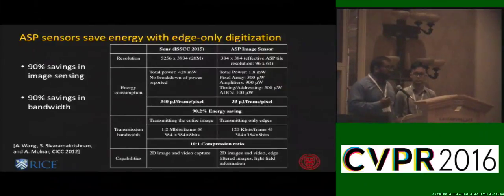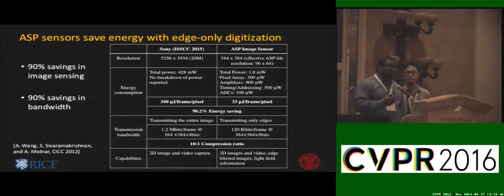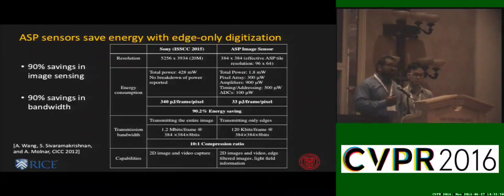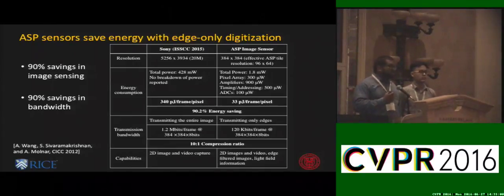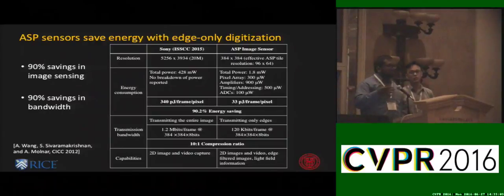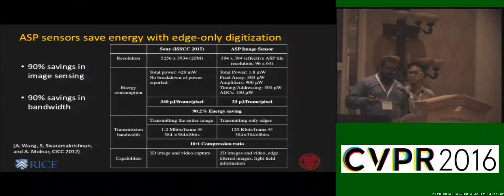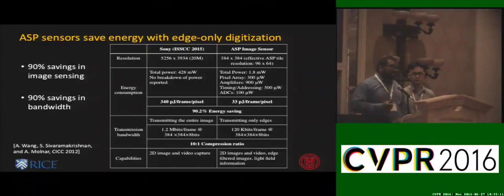Previous work has shown that ASP sensors can be designed to optimize their readout circuitry to only digitize when edges are present — we only turn on our ADCs when edges are present. This leads to about a 90% savings in image sensing and a 90% savings in data bandwidth from off the sensor to the CPU, GPU, or whatever you're computing on. I encourage you to read previous work showing the circuit implementations of how this is done, and this is compared with a modern smartphone image sensor.